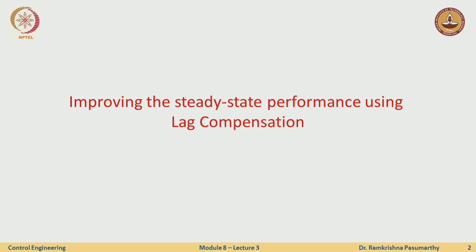Continuing with our design methods using root locus, in this lecture we will see design criteria to improve the steady state performance — essentially reducing steady state errors to zero or below some predefined values. This is done with something called lag compensation. Lag compensation is an approximation of integral control. Adding an integrator increases the type of the system, which helps track signals better — relating type 2 systems to acceleration error constants, velocity error constants, and so on.